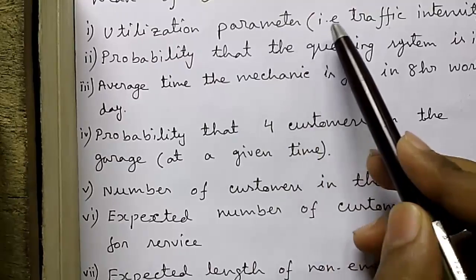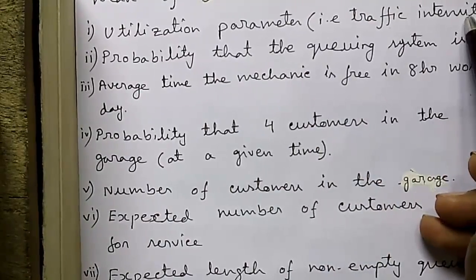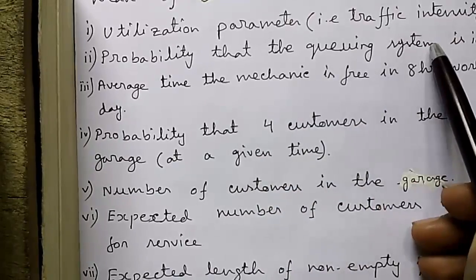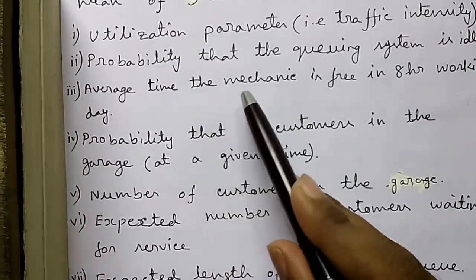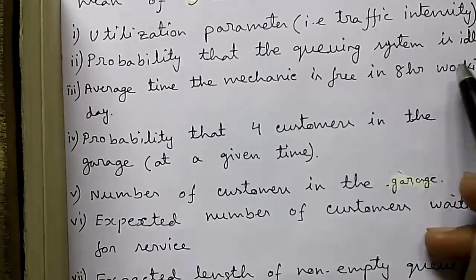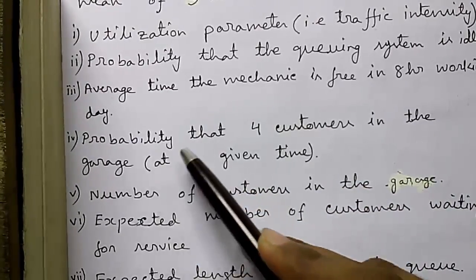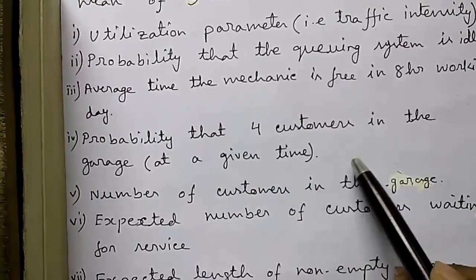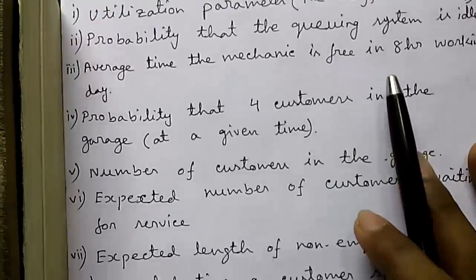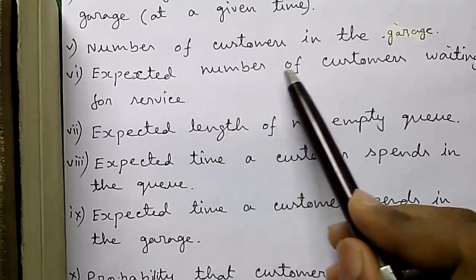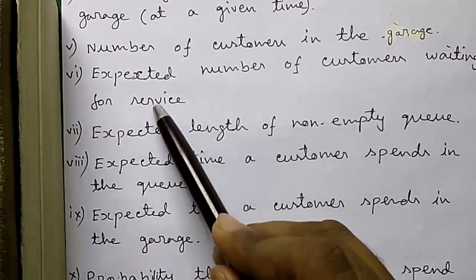So first we have to calculate: 1) the utilization parameter also called the traffic intensity; 2) probability that the queuing system is idle; 3) average time mechanic is free in an 8-hour working schedule; 4) probability that 4 customers are in the garage at a given time; 5) number of customers in the garage; 6) expected number of customers waiting for service.